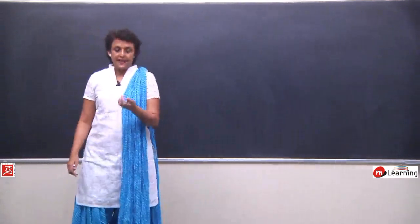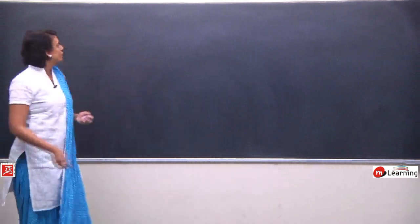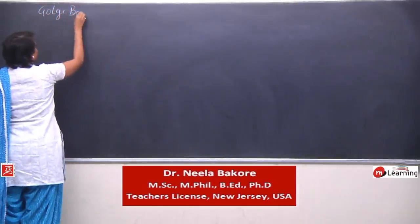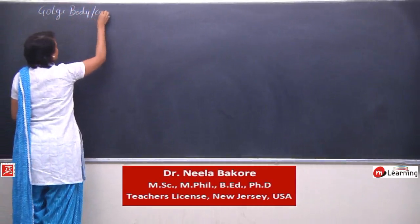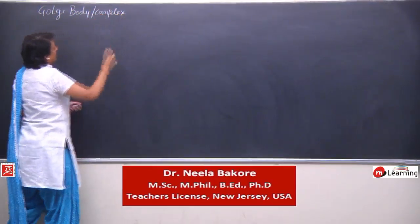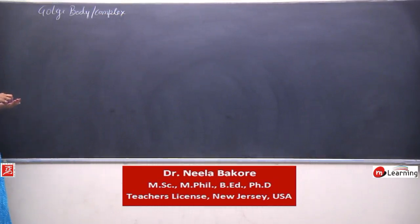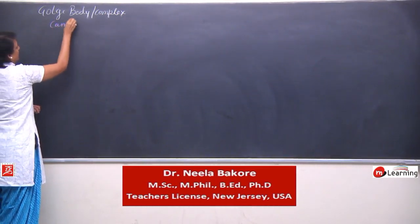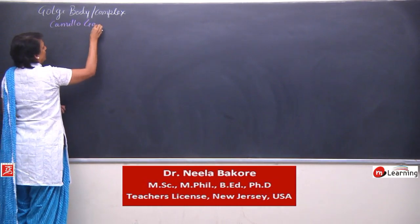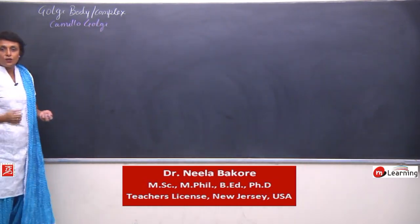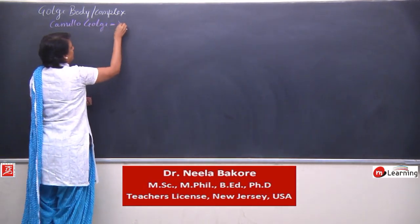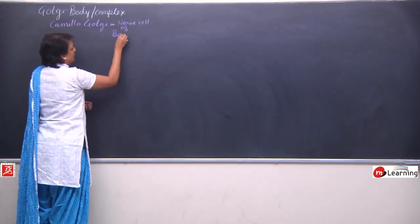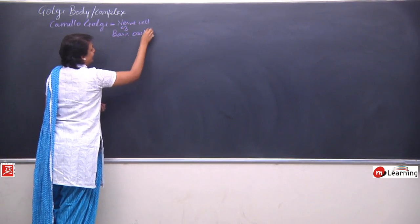Let us start with the next organelle, that is Golgi body or Golgi complex. The name is given because of the scientist Camillo Golgi, who observed this complex for the first time in the nerve cell of barn owl and cat.